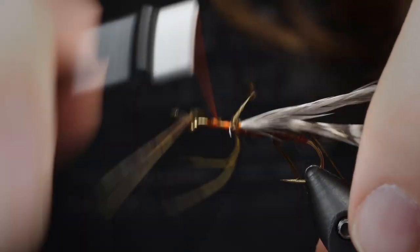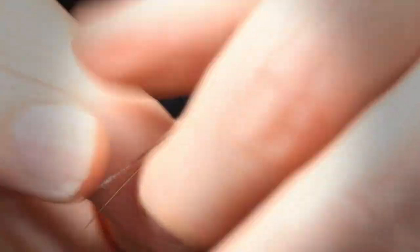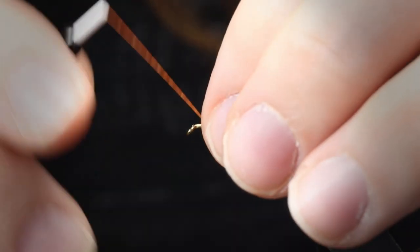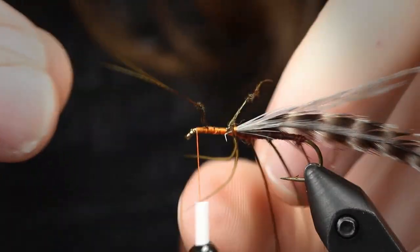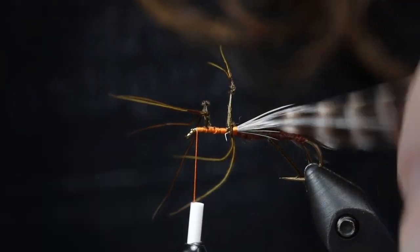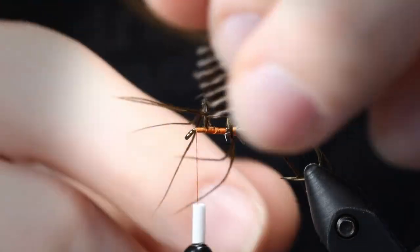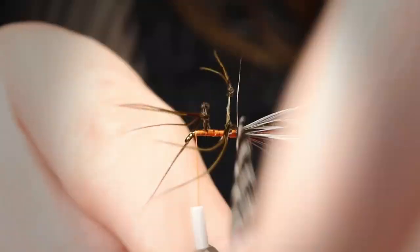I'm going to do just a couple more securing wraps, just kind of lock those legs in there, create a nice kind of thread body. Now I'm going to push this back, I'm going to take this thread and wrap forward again. So now it's right behind the eye of the hook there. And you see I'm kind of constantly playing with these legs, getting them to where I want to go. If there's any editing I have to do, I can just go back and do that.